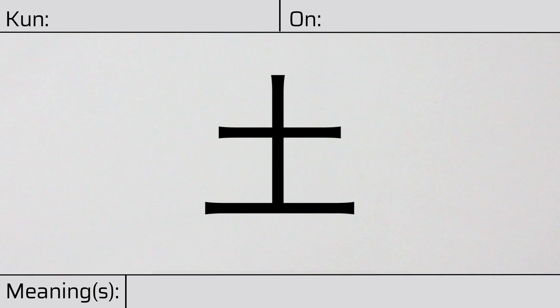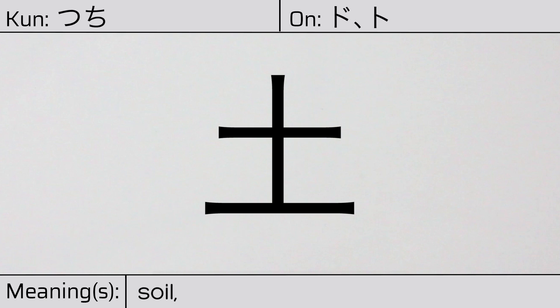Welcome to this lesson on Japanese kanji. Today, we'll be discussing this character. This kanji has kunyomi or Japanese reading of tuchi, and it has onyomi or Chinese readings of do or to. This character has the meanings soil, earth, ground, or turkey as in the country. Here is the stroke order.